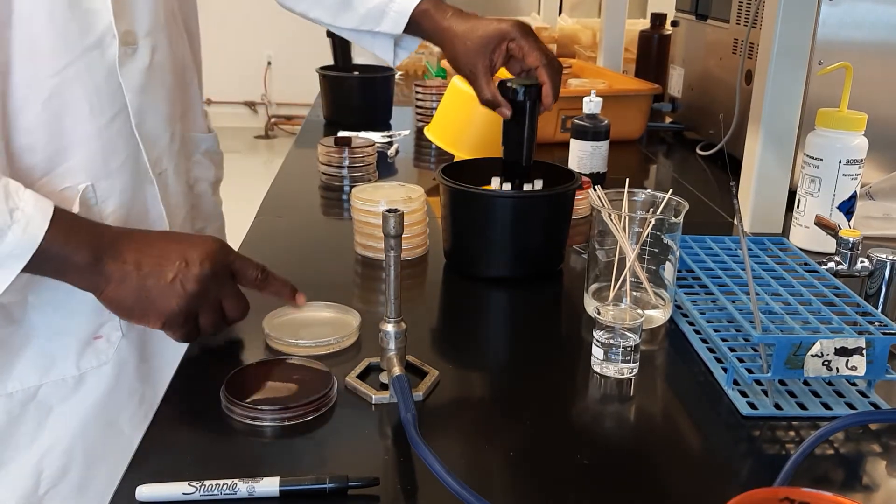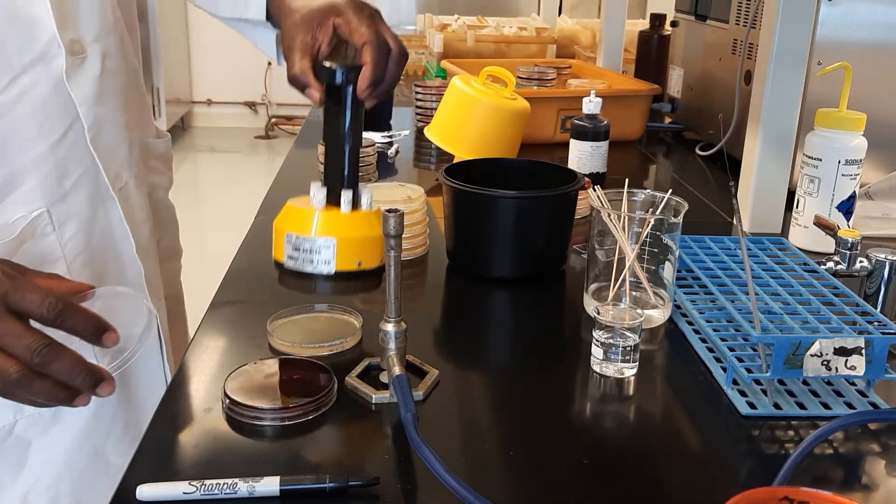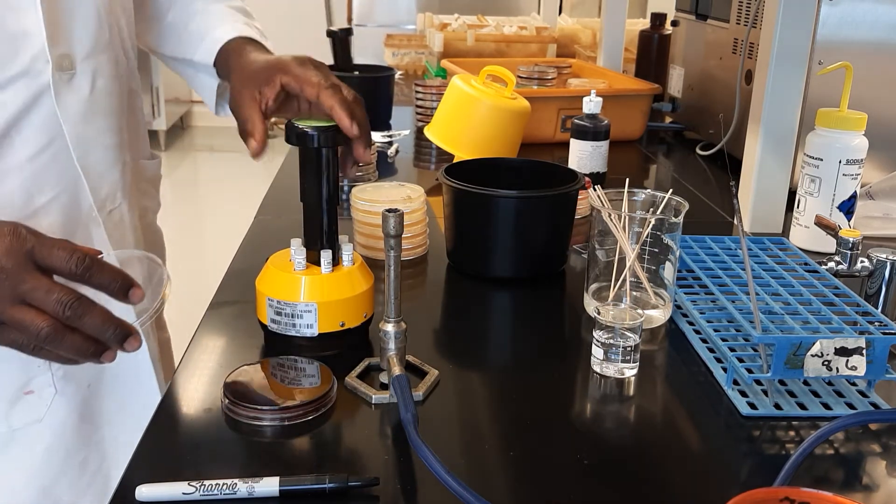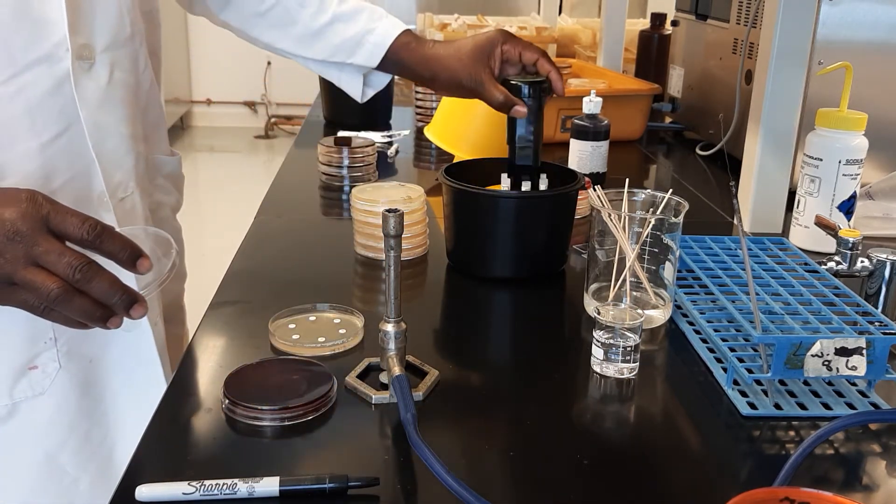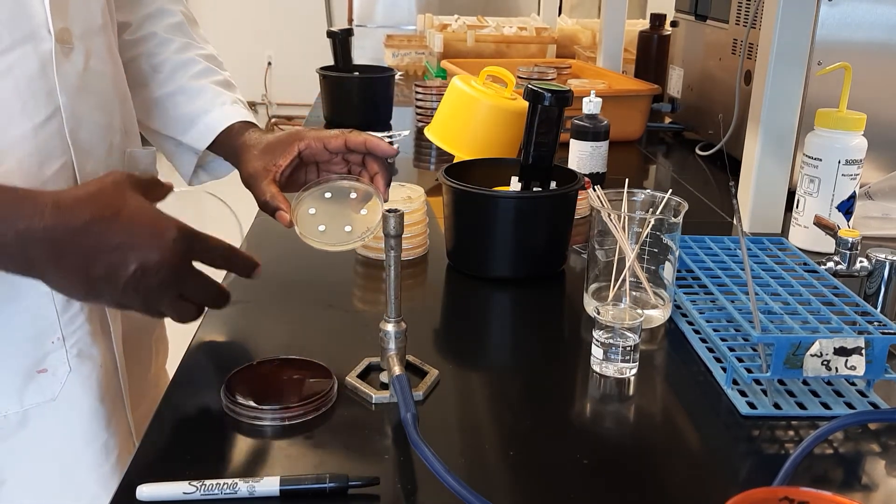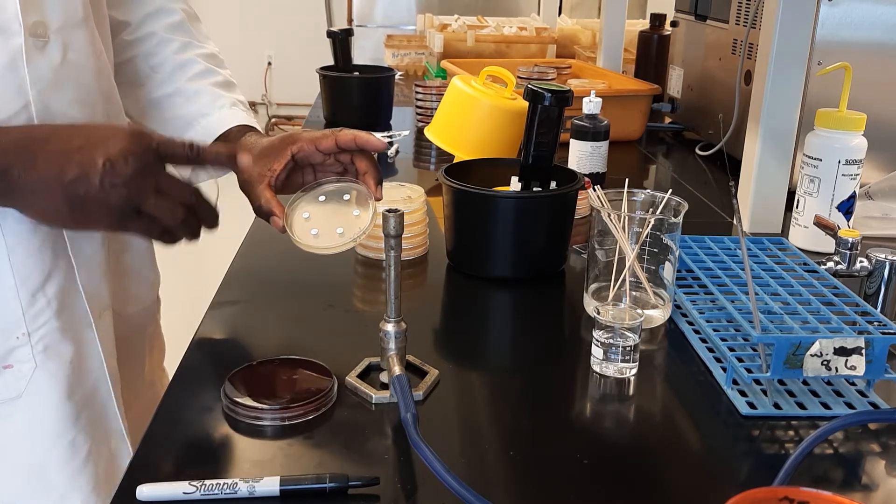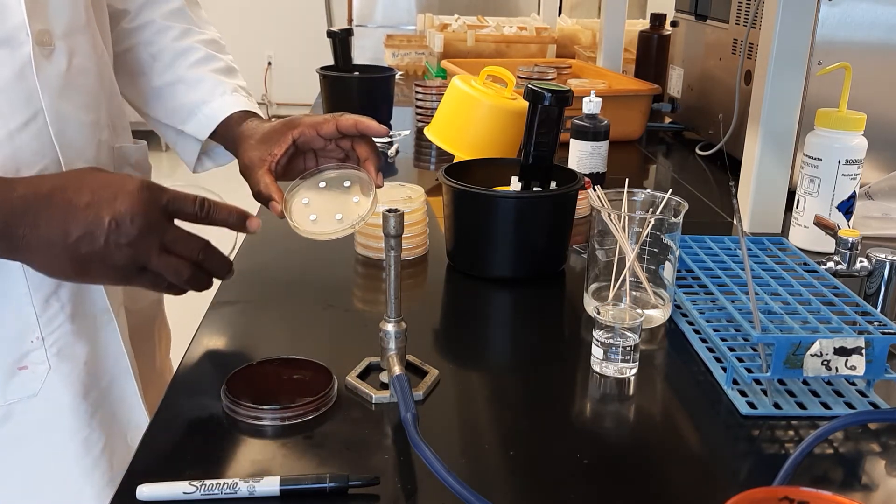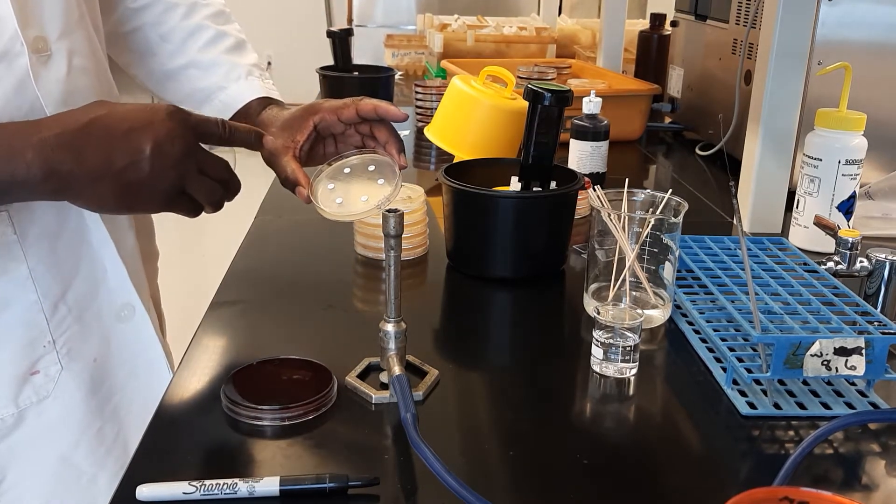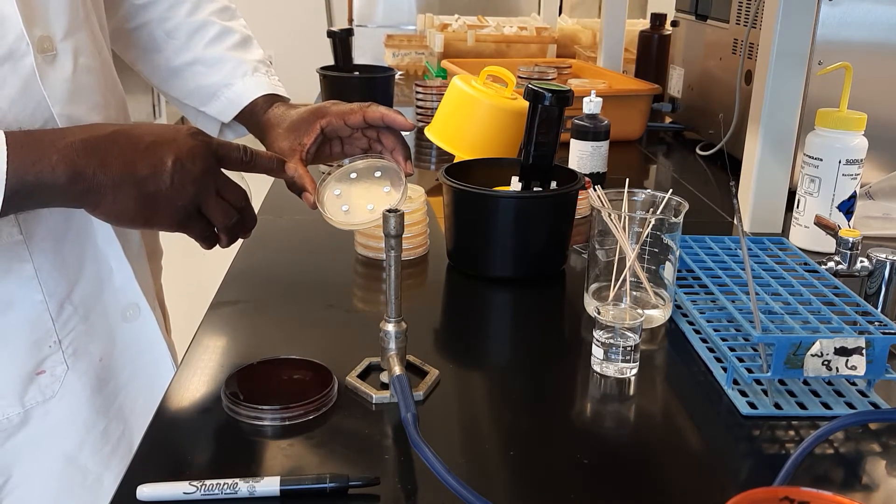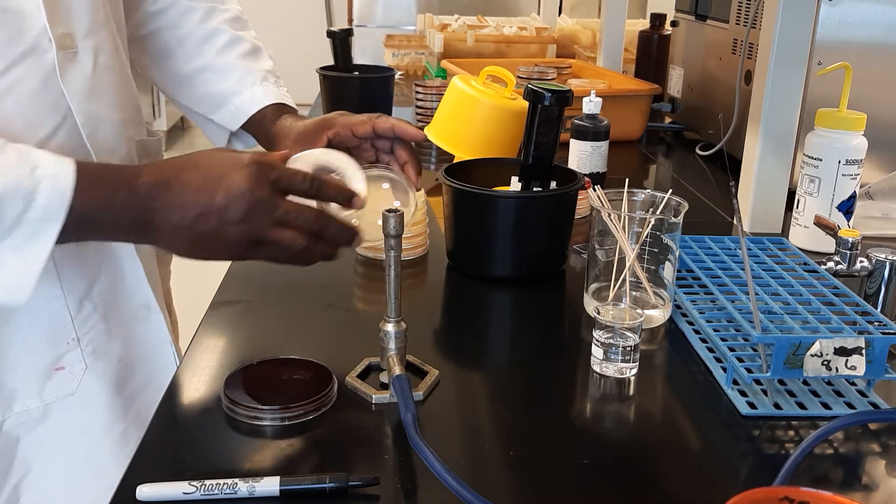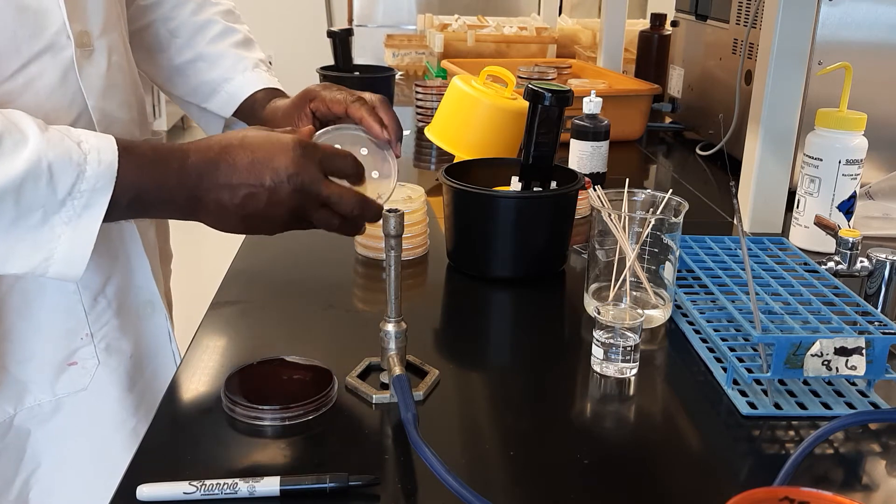And by doing that, we apply six different discs onto that particular plate. So instead of doing it individually, now it applies six at one time. So we can see we have vancomycin, tetracycline, gentamicin, erythromycin, penicillin, and chloramphenicol at different concentrations.